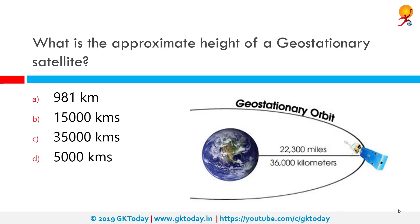What is the approximate height of a geostationary satellite? The correct answer is 35,000 kilometers. A geostationary equatorial orbit is a circular geosynchronous orbit in the plane of the Earth's equator with a radius of approximately 42,164 kilometers. A satellite on this orbit is at an altitude of approximately 35,786 kilometers above mean sea level.